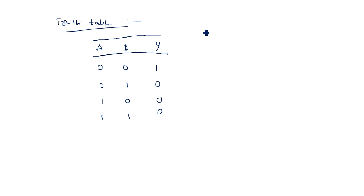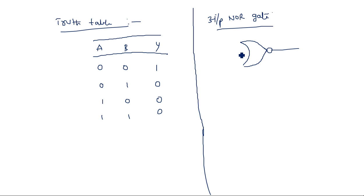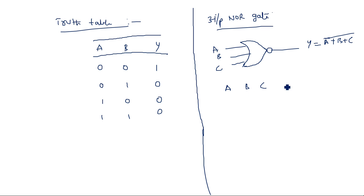Similarly, for the 3-input NOR gate, it can also be drawn in the same way but with 3 inputs: A, B and C. Y is equal to A plus B plus C whole bar. If you see the truth table with A, B, C and Y: